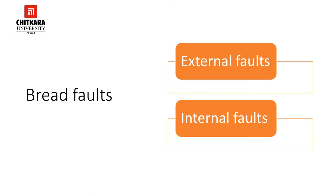Sometimes some changes will arise during the production of bread, which will be different from normal bread quality standards. It is known as bread faults. Few or the most possible causes for the faults in bread are: wrong quality of raw materials, and wrong quantity or inaccurate measurements. Inadequate knowledge about raw ingredients, raw materials and their functions. Unbalanced formula and wrong processing.